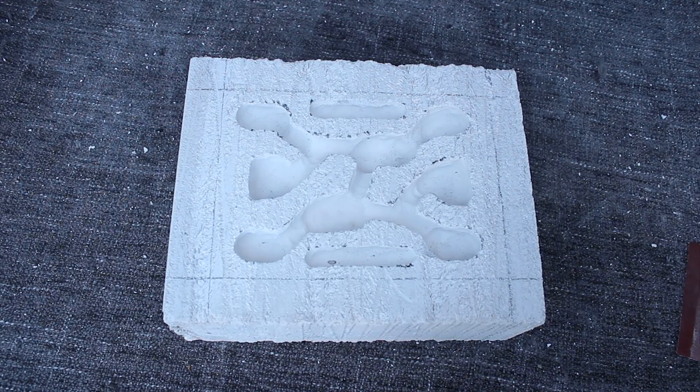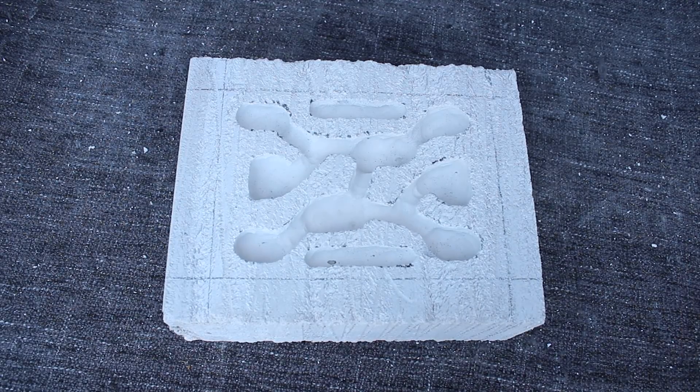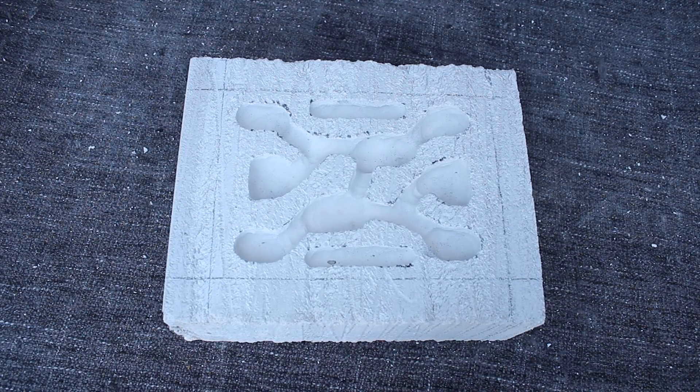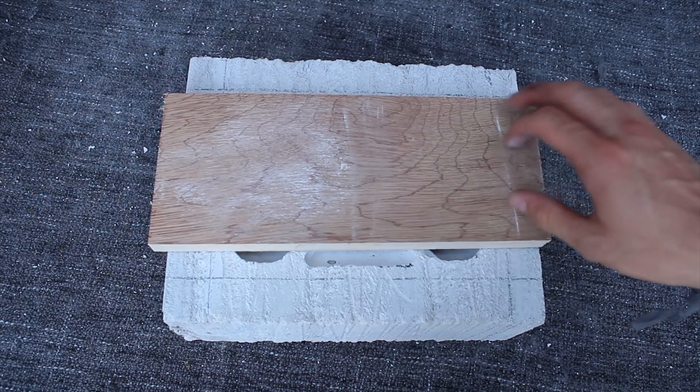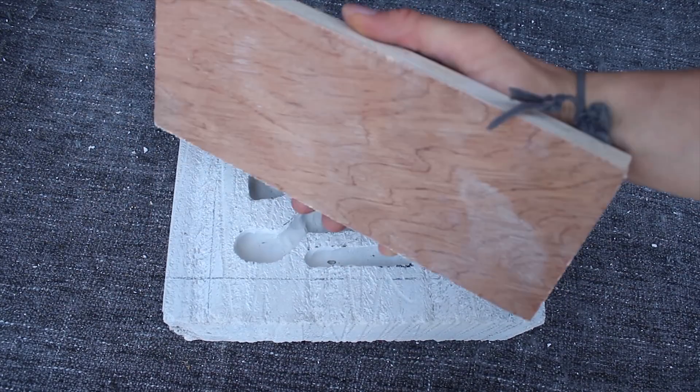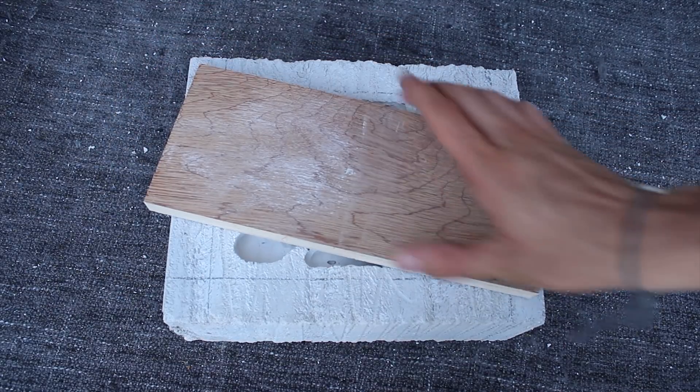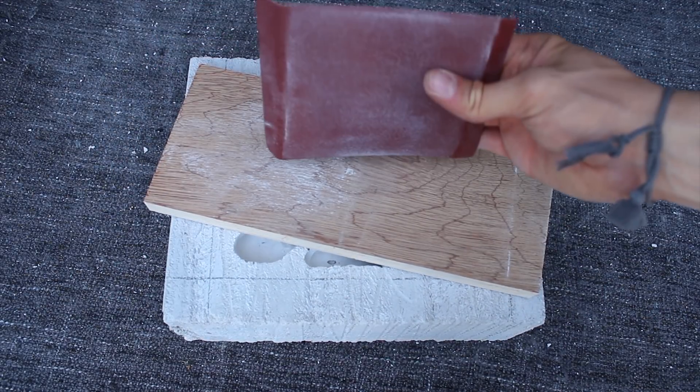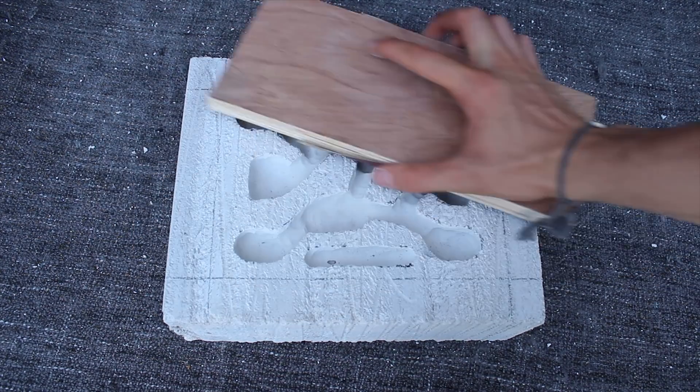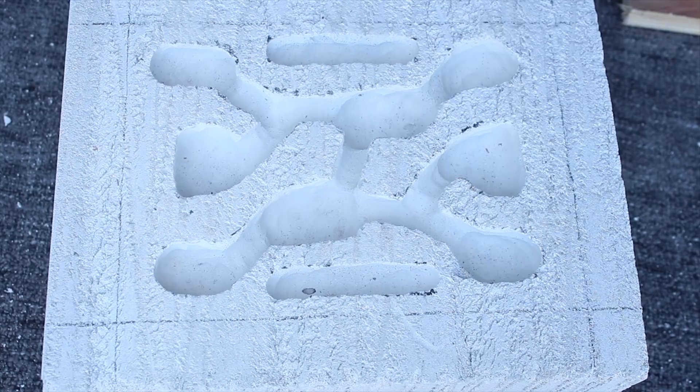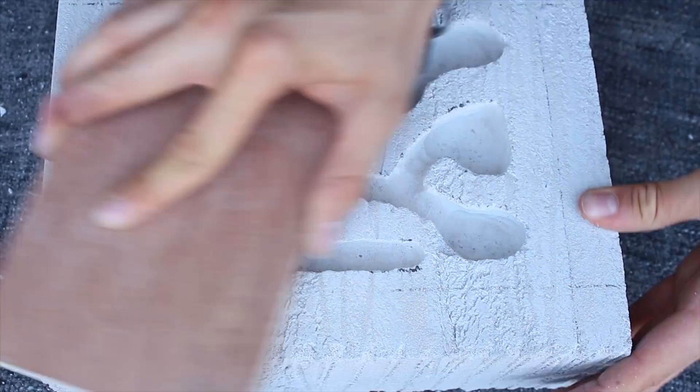So guys the next step is to now smooth down our aerated concrete. So to do this I recommend you get a small kind of flat piece of wood like I am demonstrating here and laying some sandpaper on top of the wood and then rubbing down in a circular motion over the aerated concrete. This will gradually flatten the whole surface area.